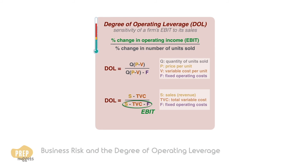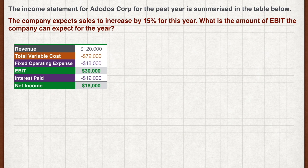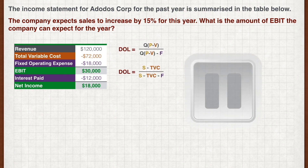Let's conclude this lesson with an example. The income statement for Dodus Corp for the past year is summarised in the table below. The company expects sales to increase by 15% for this year. What is the amount of EBIT the company can expect for the year? Pause the video now and work out your answer.